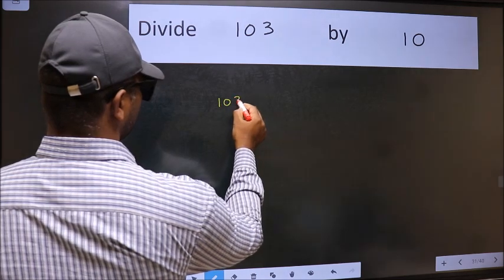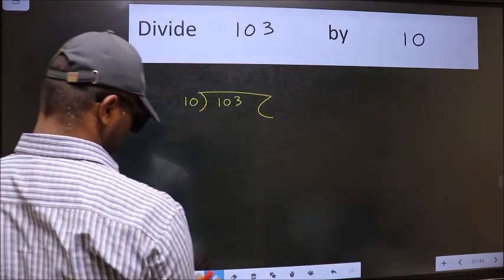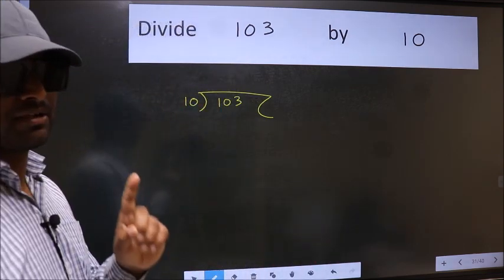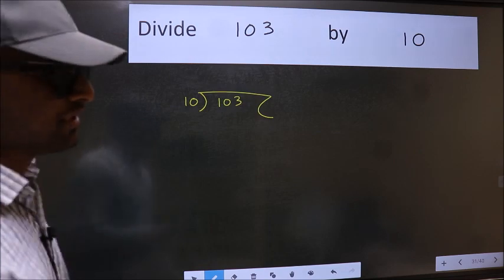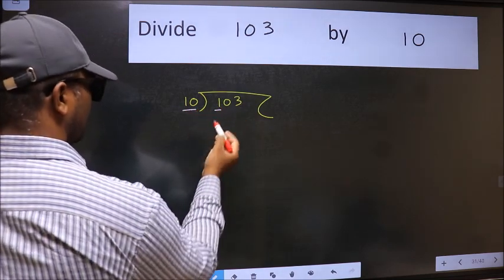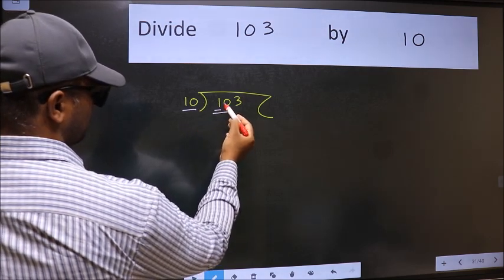1, 0, 3 and 10 here. This is your step 1. Next, here we have 1 and here 10. 1 is smaller than 10, so we should take two numbers: 10.